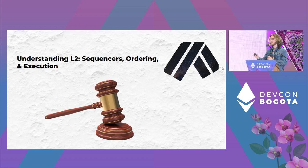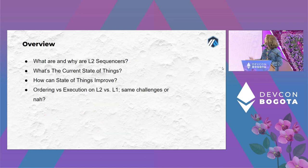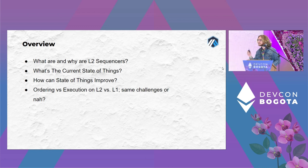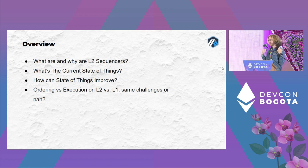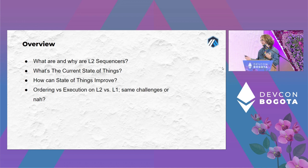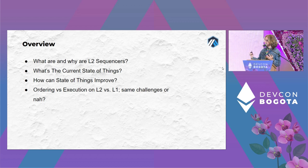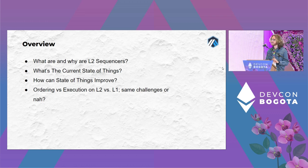I'll start with an introduction into the motivation and design rationale of what sequencers are and why we have them on layer two. We'll talk about the current state of sequencers in the layer two world — basically that they're centralized, but there's more to say than just that — and then focus on ways we can improve this: trust-minimizing them, decentralizing them, and limiting sequencer power in various ways.